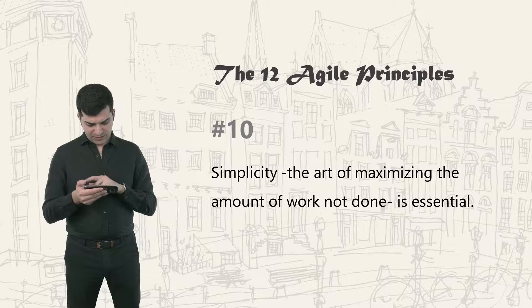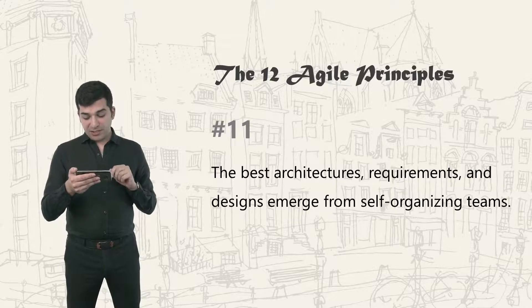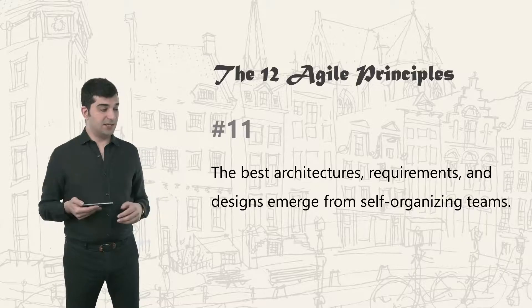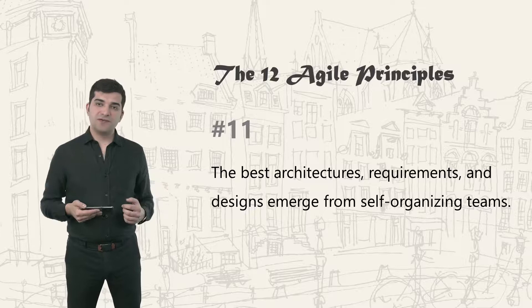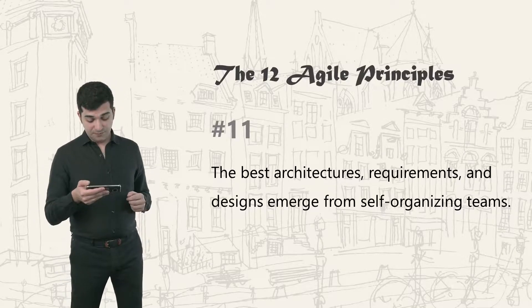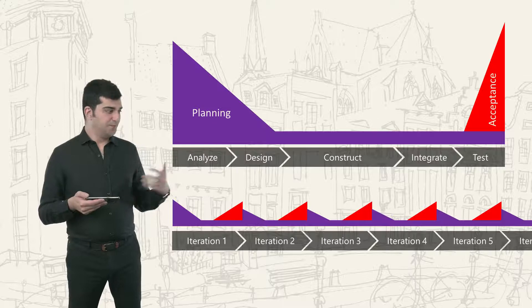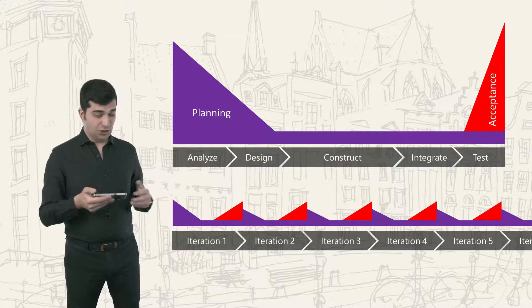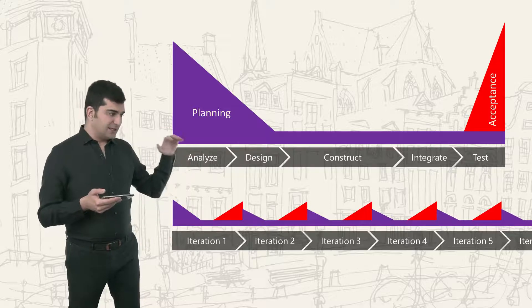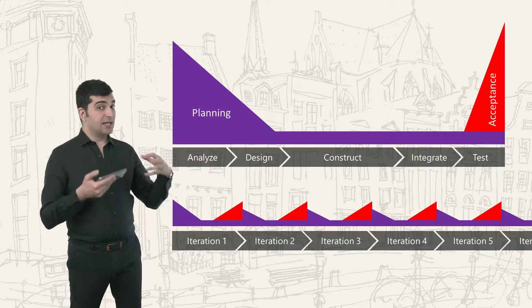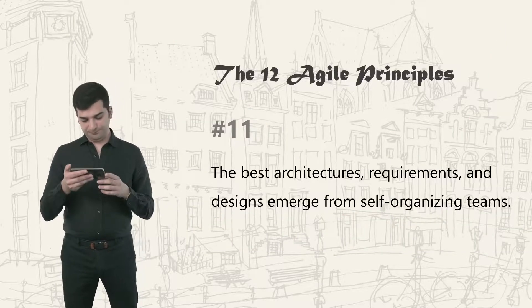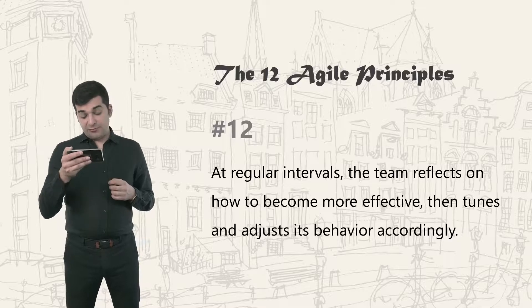The eleventh principle: the best architectures, requirements, and designs emerge from self-organizing teams. A self-organizing team finds its own way instead of receiving orders — you empower people to decide about certain things. In agile development we cannot always escalate issues or decisions, so we really need at least a certain level of self-organization. It's not just a good idea — it's a necessity for agility.